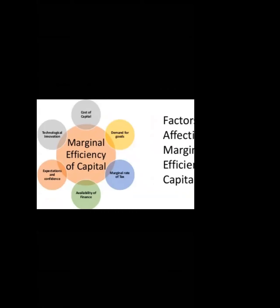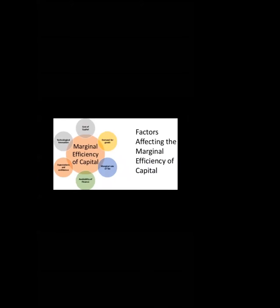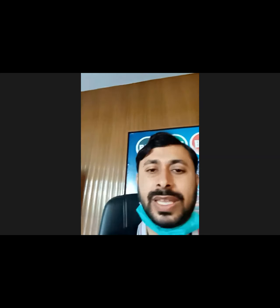The six factors that affect marginal efficiency of capital are: first, cost of capital; second, demand for goods; third, marginal rate of tax; fourth, availability of finance; fifth, expectations and confidence; and sixth, technological innovations. Now we will try to understand each factor.